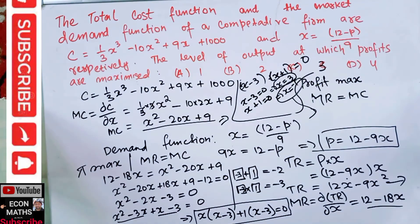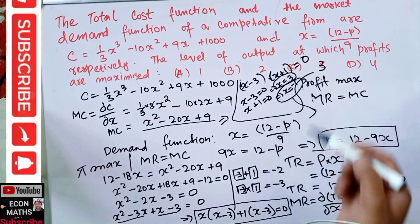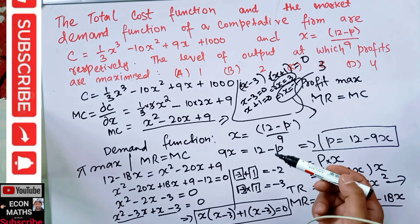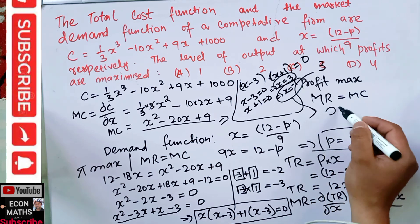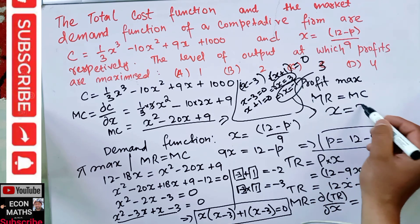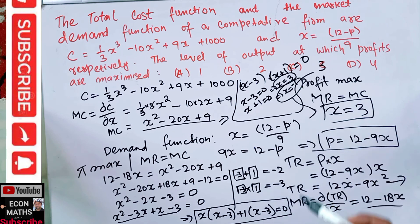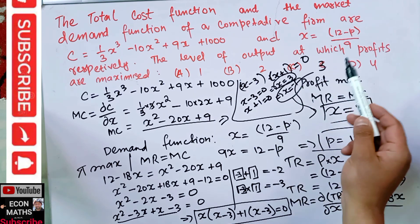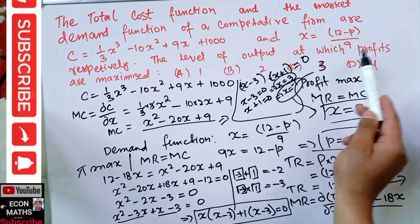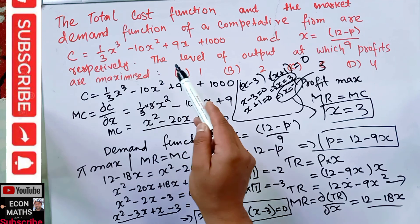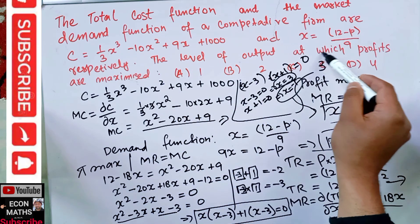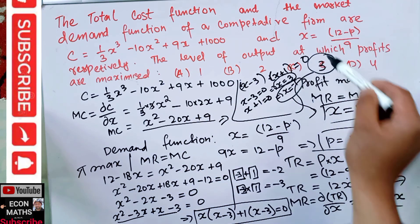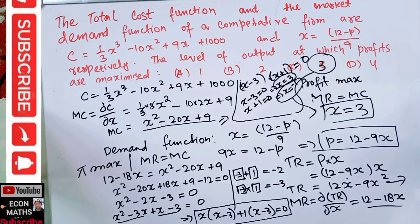Since x = -1 gives a negative quantity, which is not possible, we discard it. We are left with x = 3. This means the level of output at which profits are maximized is 3 units, so the correct option is 3.